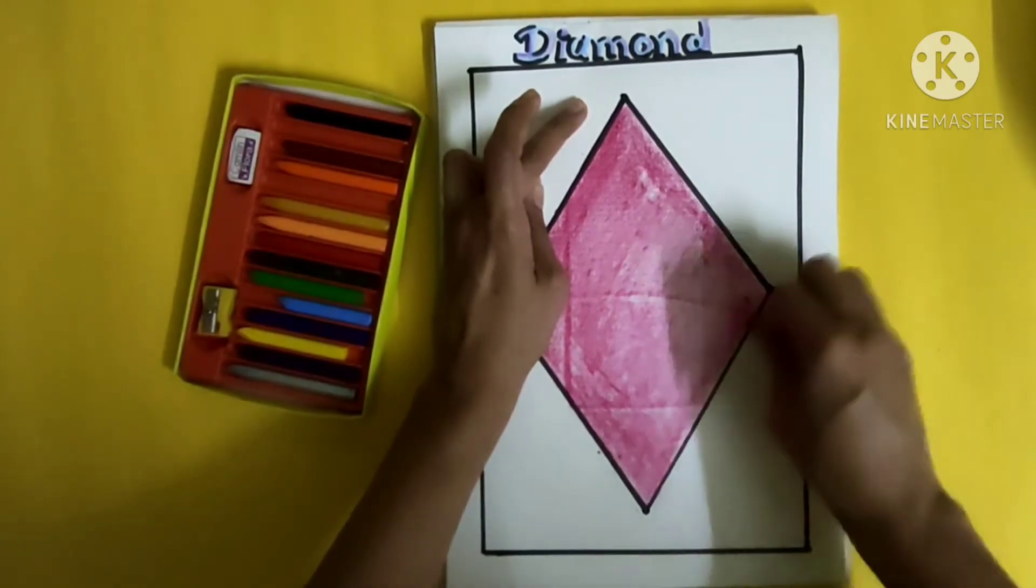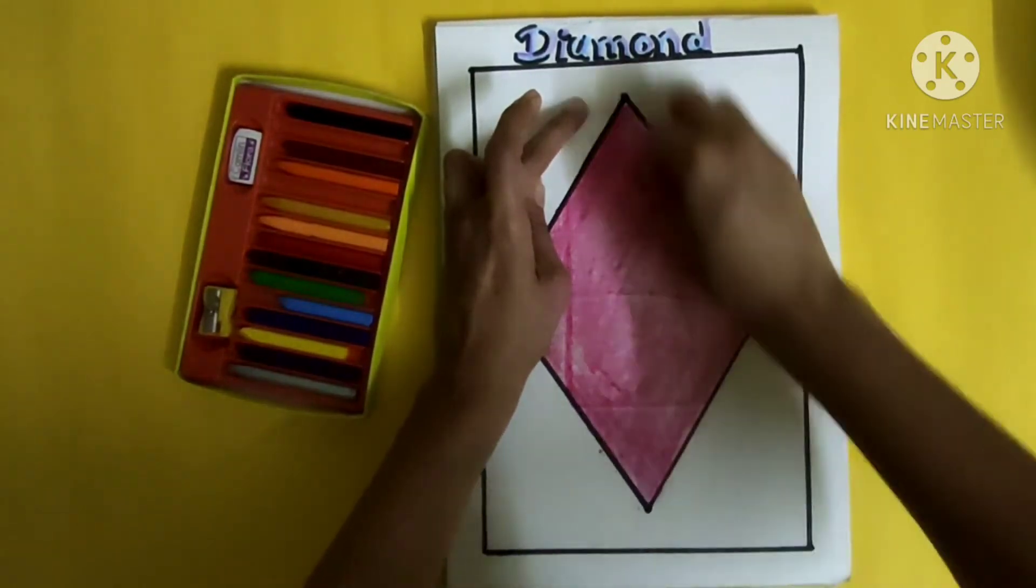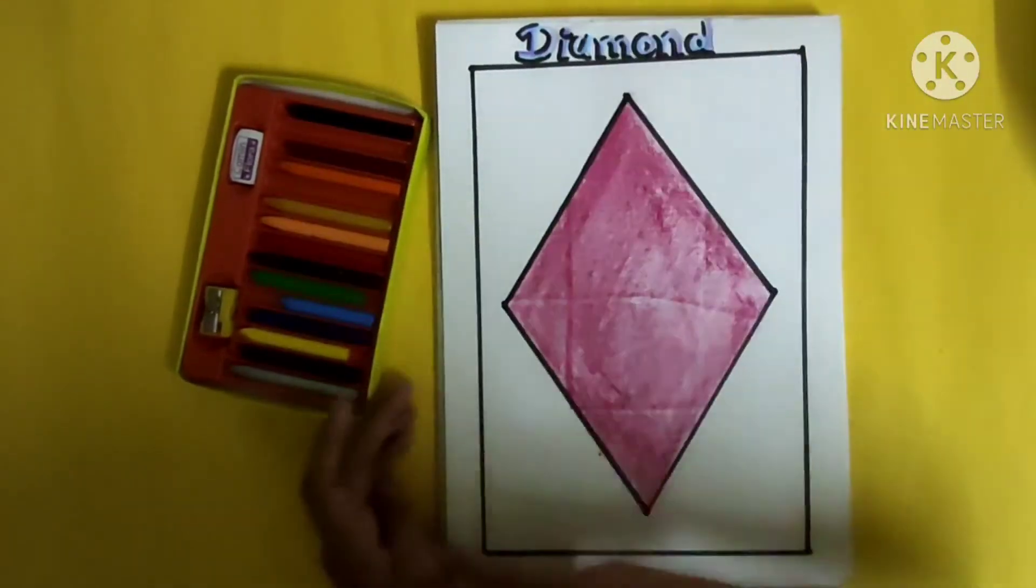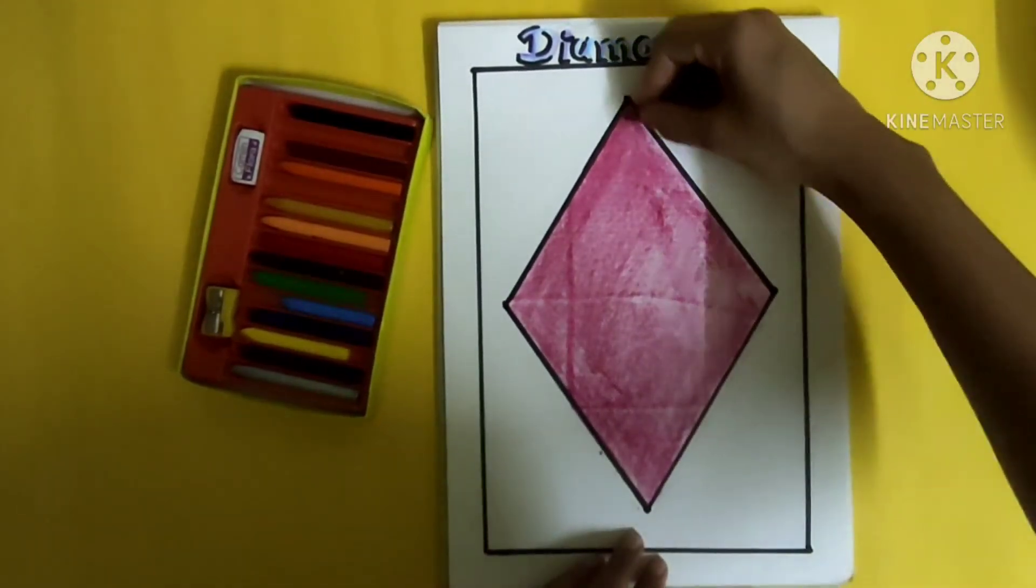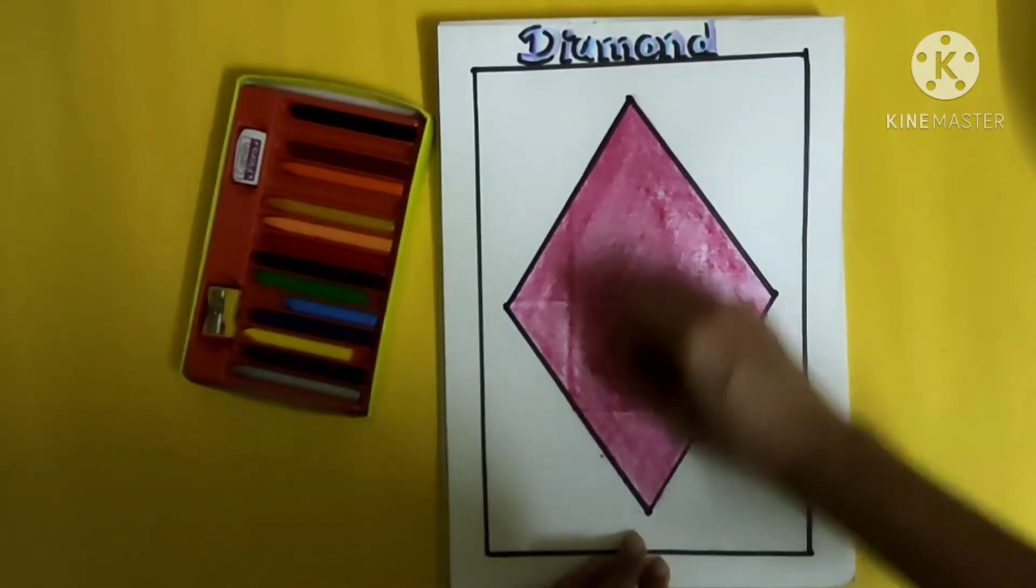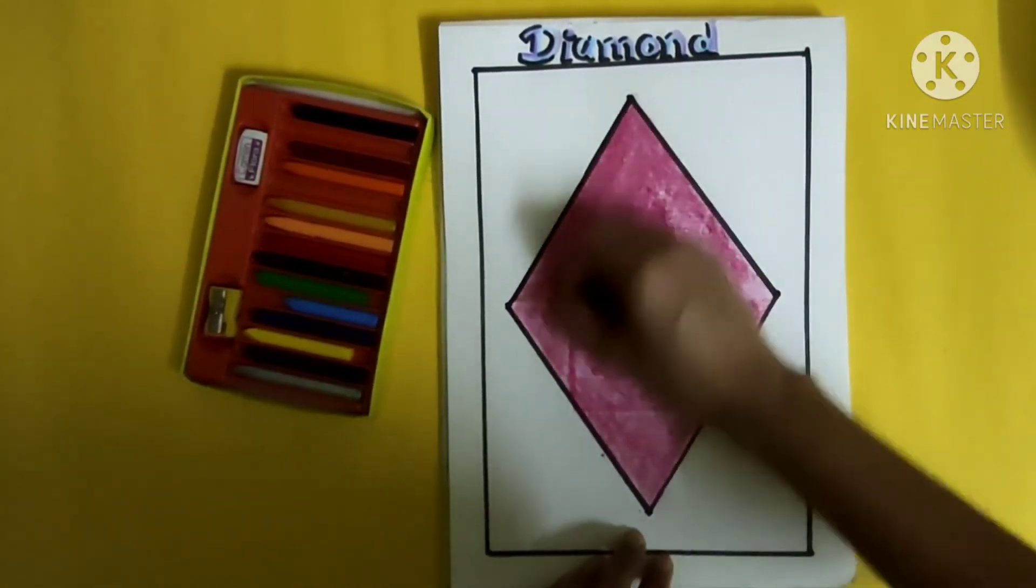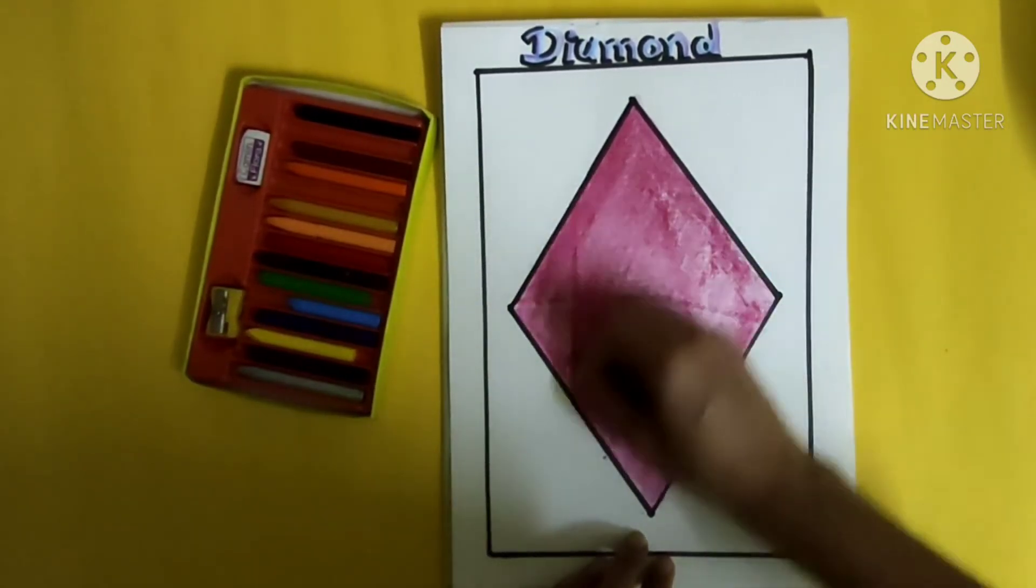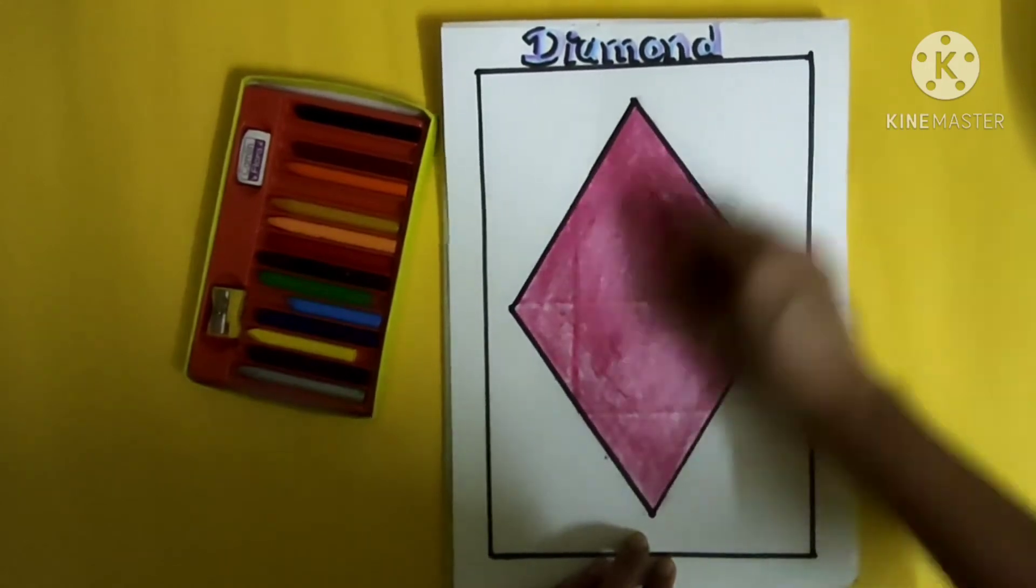Then, yes, we eat in the Diwali festival lots of shankarpadas. So that's also in the diamond shape. Then some barfis, kaju katli, these are also in the diamond shape.